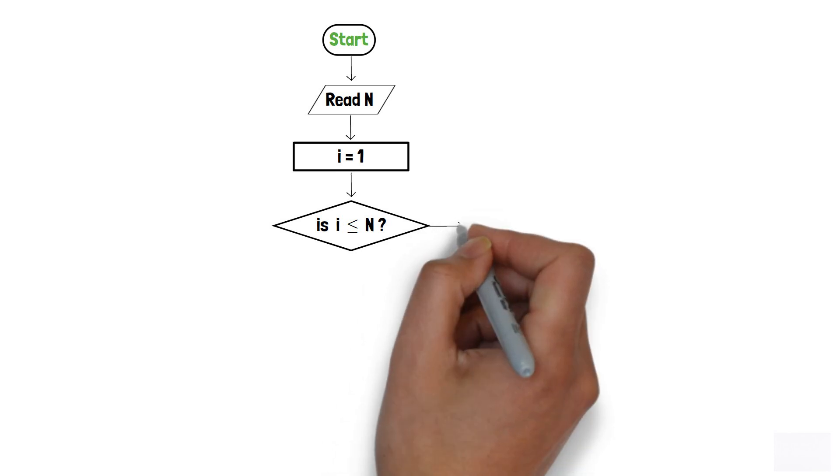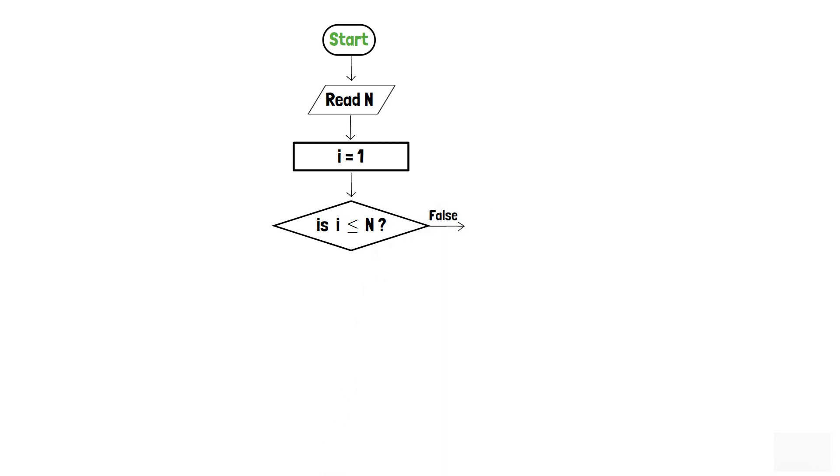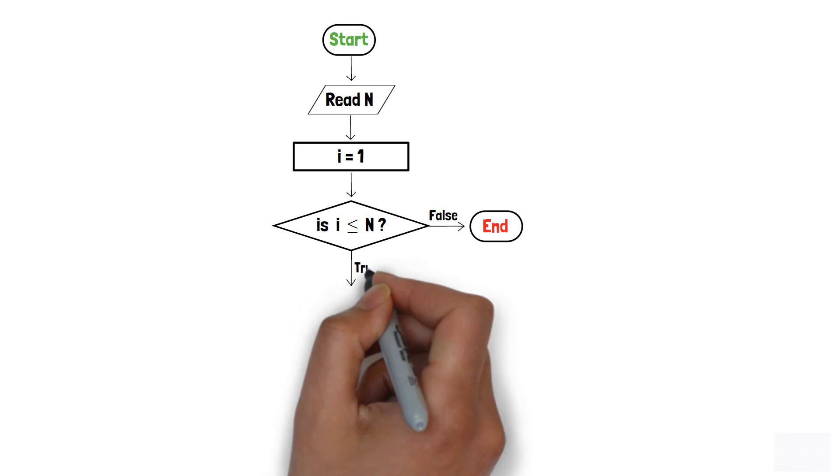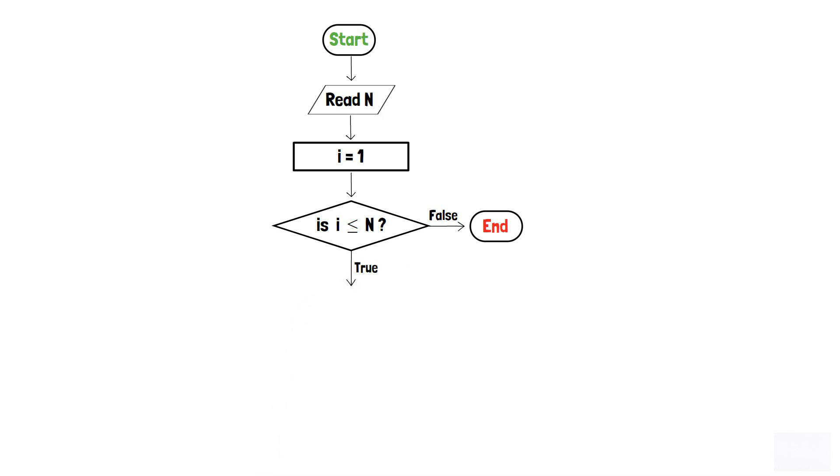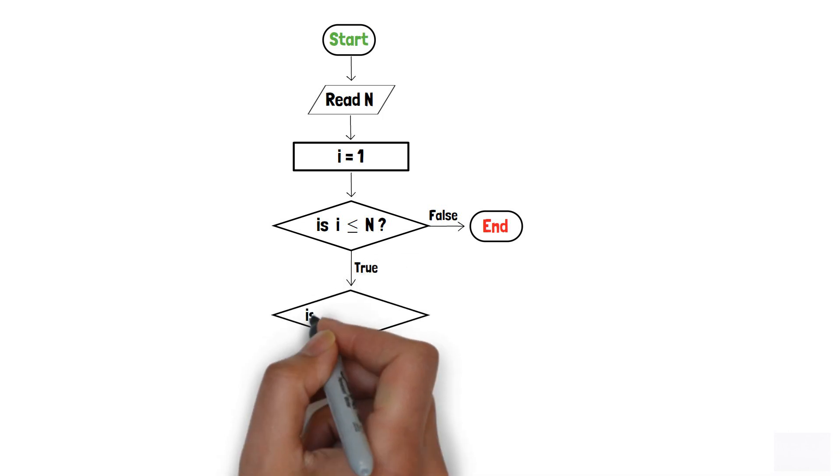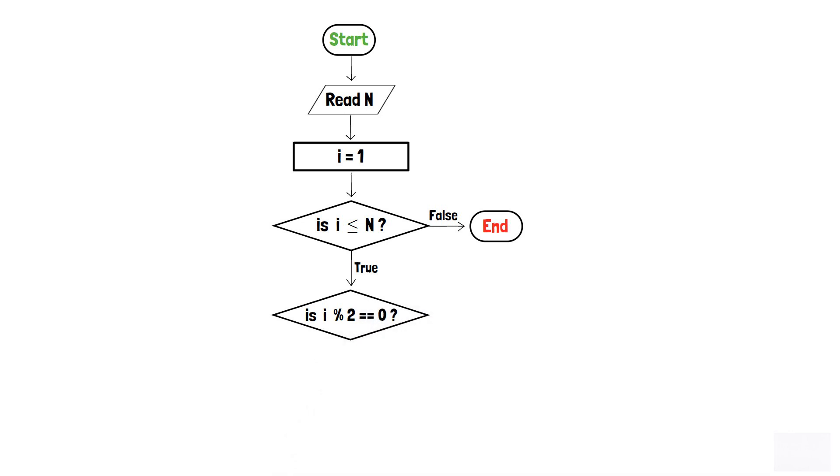If i is not less than or equals to n, we will end the program with end terminator. And if the condition in the decision box is true, then we will again check if i modulo 2 is equals to 0 or not with another decision box.